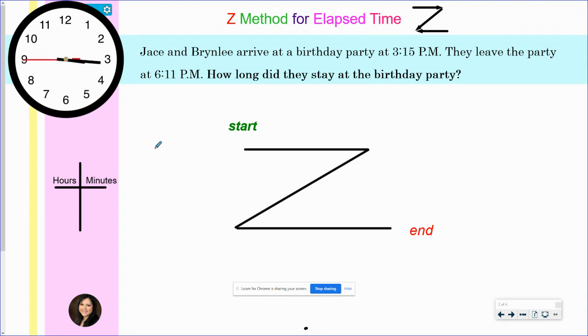So let's take a look at this word problem. Jace and Braylee arrive at a birthday party at 3:15 PM. They leave the party at 6:11 PM. How long did they stay at the birthday party?